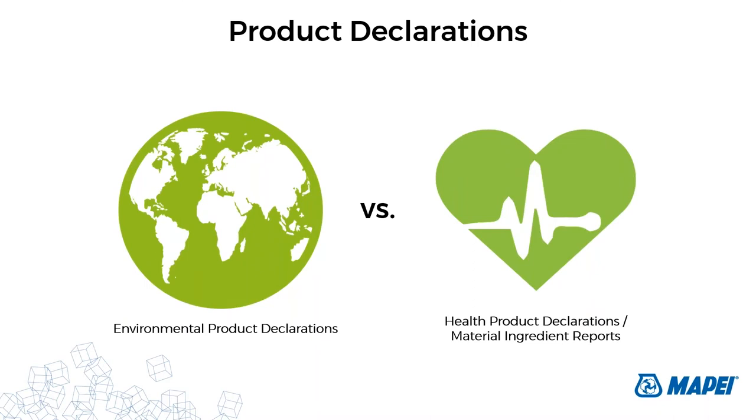For example, projects pursuing BREEAM or Green Globes would prioritize environmental product declarations over material ingredient reports. For LEED, they prefer if you have both. It's really up to the green building program you're pursuing as far as what's more important. Having one or the other does not imply that a product is environmentally superior or healthier — it's about knowing what it takes to contribute to green building points.